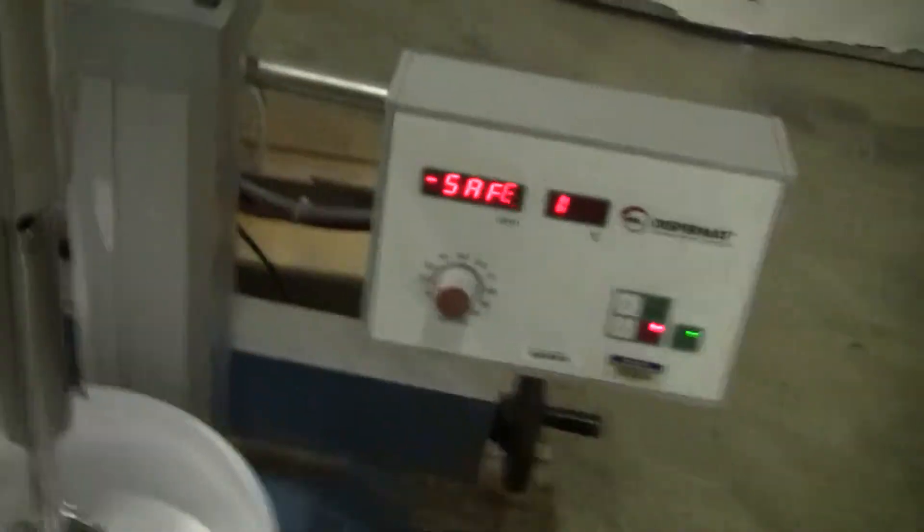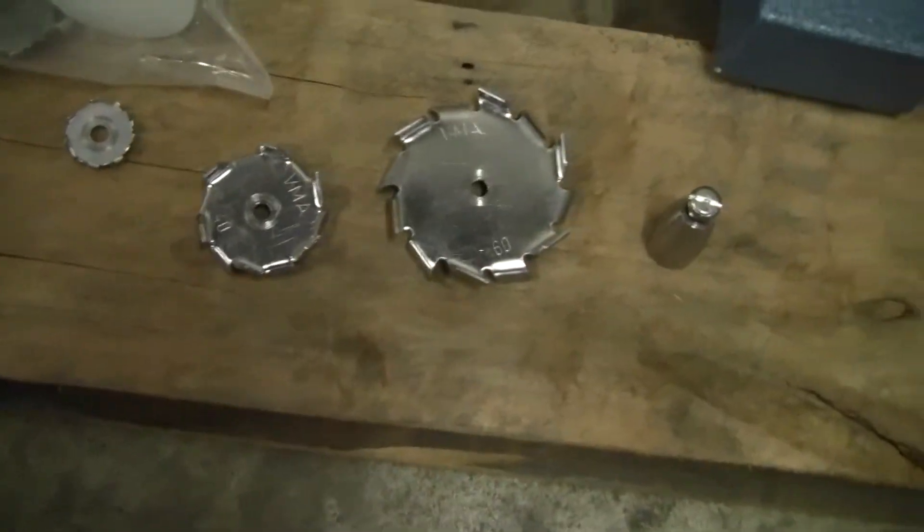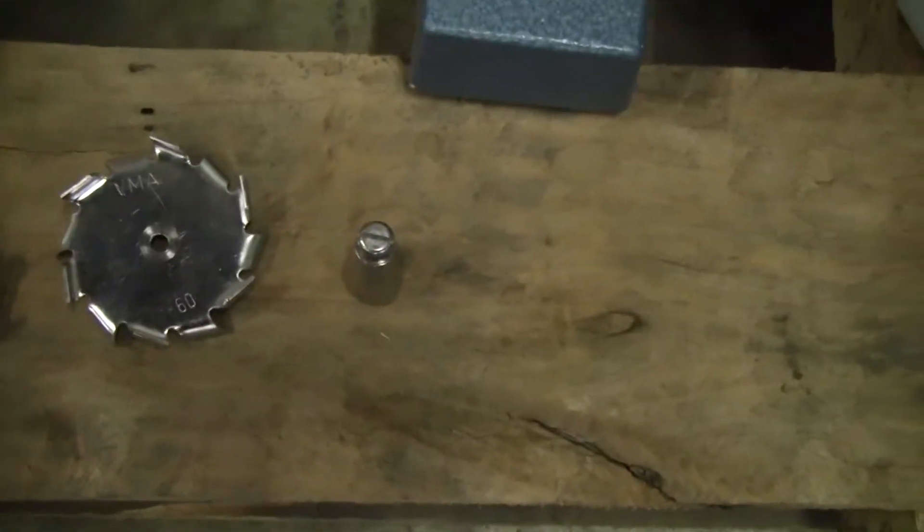It has an electronic up and down. As you can see, we have a 75 millimeter disperser on there. It also comes with other dispersers: 20 millimeter, 40 millimeter, and 60 millimeter.